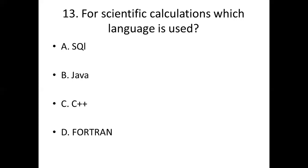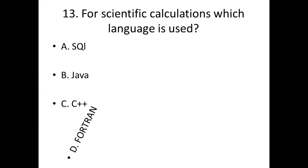Thirteenth bit. For scientific calculations, which language is used? Option A, SQL. Option B, Java. Option C, C++. Option D, Fortran. Answer: Option D, Fortran.